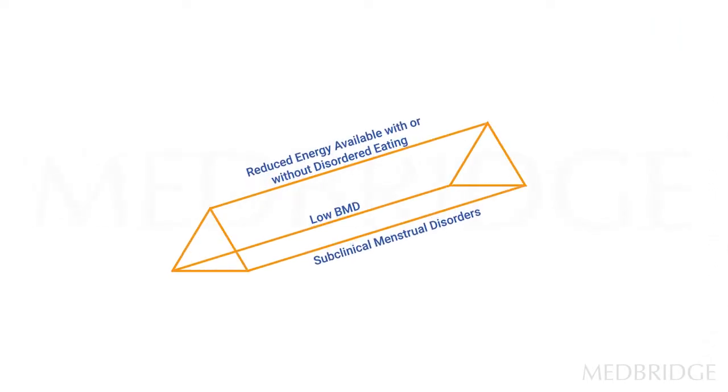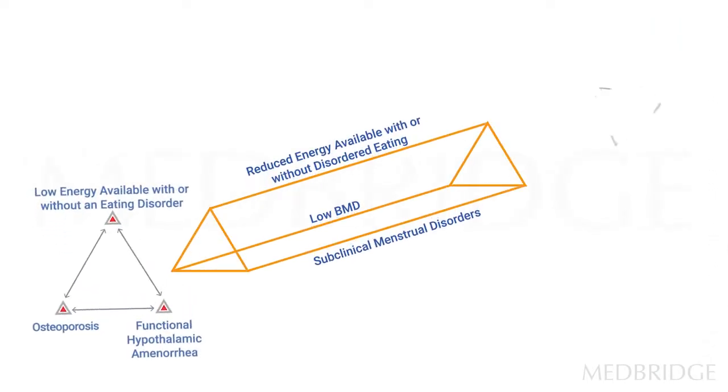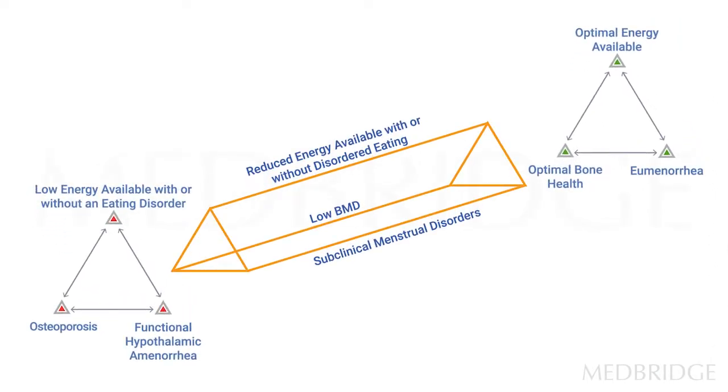The risk factors for lowered energy availability are the following — lots of things can come into play. Look at that spectrum diagram again and think of optimal eating to disordered eating or eating disorders.